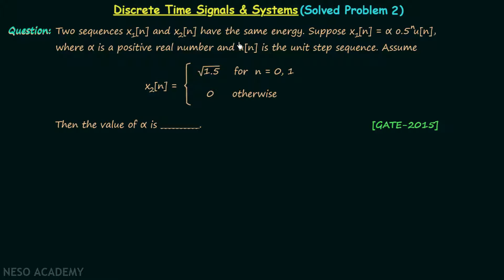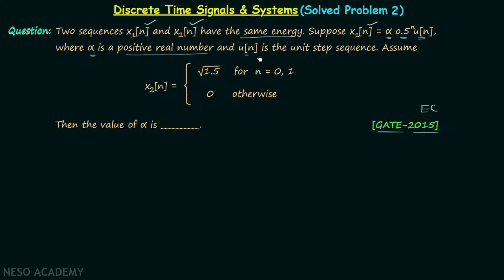Let's solve a numerical answer type question taken from GATE 2015 Electronics and Communication paper. In this question there are two sequences x1n and x2n and they have the same energy. Signal x1n is equal to alpha times 0.5^n times u[n], where alpha is a positive real number and u[n] is the unit step sequence.